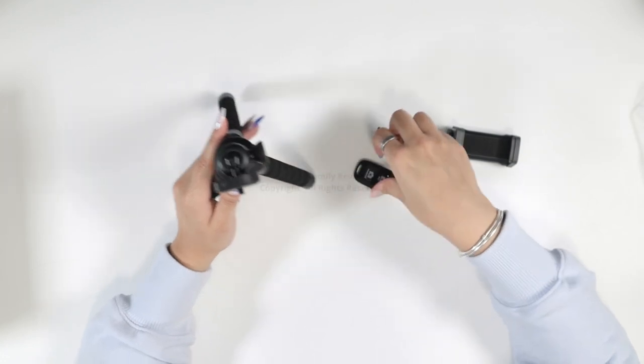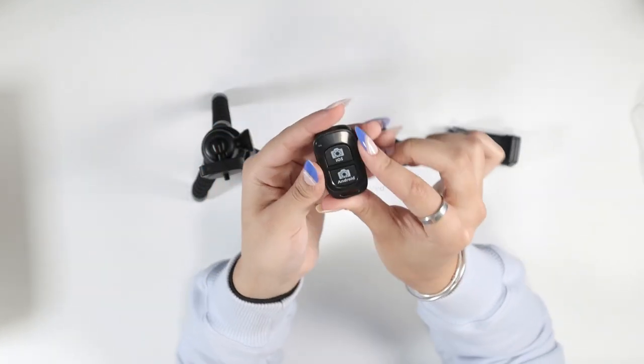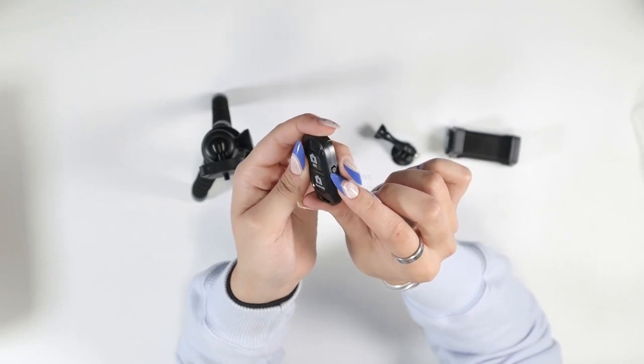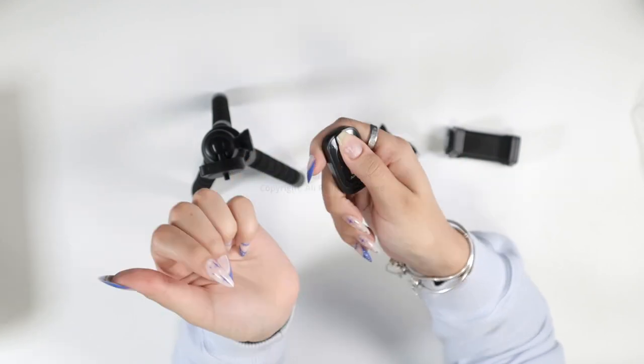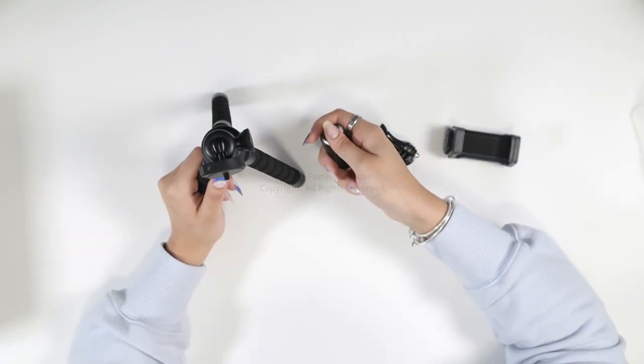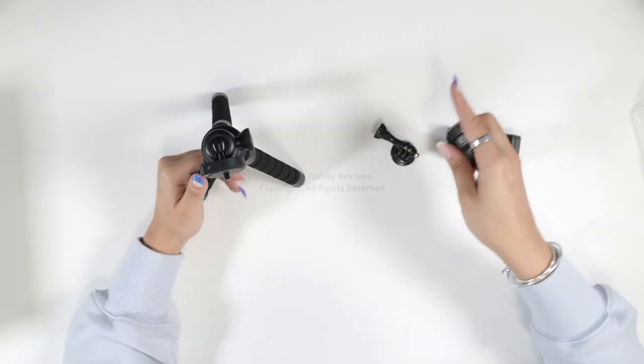I think my favorite absolute part of this is the remote. So you do get the remote, and whether you have iOS or Android, all you got to do is turn this on, connect to Bluetooth, and you can press it for photos. So just like that, you can hide it in your hand when you're taking pictures with someone, or you can set a timer, press it, drop it in your pocket, and pose for the picture, you guys.